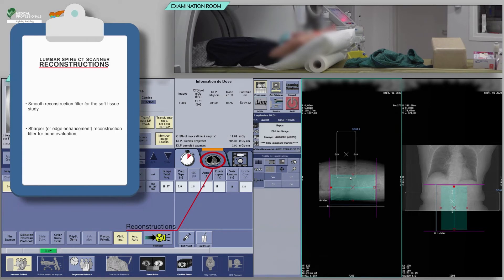For the acquisition of a lumbar spine, you will need at least a smooth reconstruction filter for the soft tissue study and a sharper or edge enhancement reconstruction filter for bone evaluation.